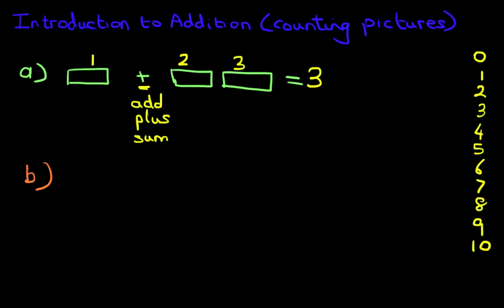Let's have a look at another example. This time we've got circles. The first thing to note is the plus sign. So we're going to add. So let's begin by counting how many circles there are in total. Count with me, one, two, three, four, five. The answer is five.